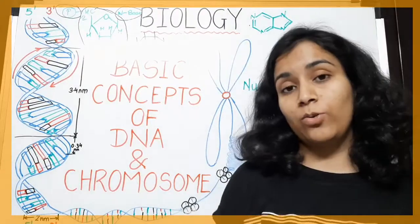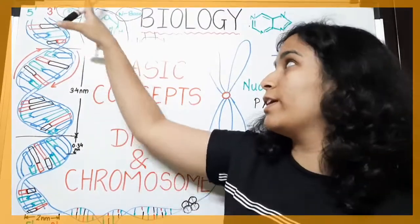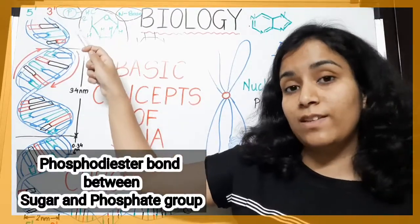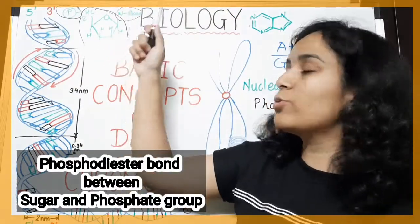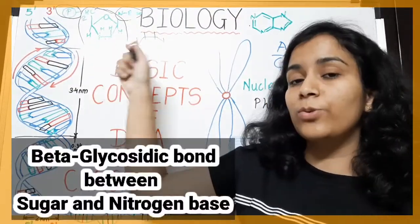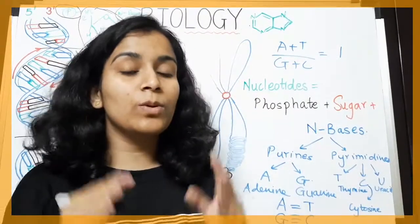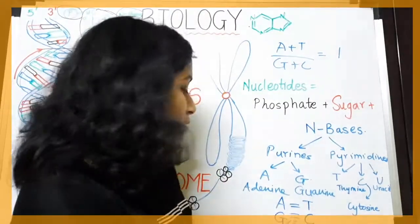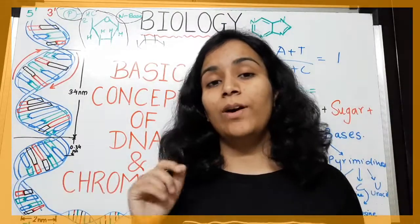One important thing I forgot to mention: the types of bonds between nucleotides. The bond between the phosphate group and the sugar is known as a phosphodiester bond. The bond between the nitrogen base and the sugar molecule is known as a beta-glycosidic bond. The bond between two complementary nitrogen base pairs is known as a hydrogen bond.